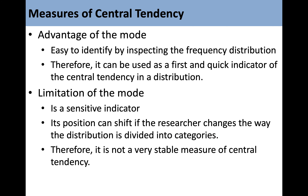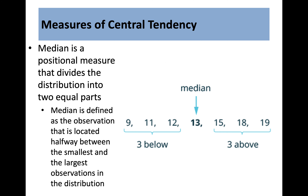The advantage of the mode is that it is easy to identify by inspecting the frequency distribution, so it can be used as a quick first indicator of central tendency. The limitation is that it is not a very stable measure of central tendency — its position can shift if the researcher changes the way the distribution is divided into categories. The median is a positional measure that divides the distribution into two equal parts, defined as the observation located halfway between the smallest and largest observations. For example, in a given set of numbers, if the one in the middle is 13, then the median is 13.